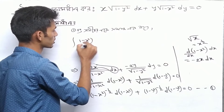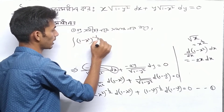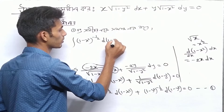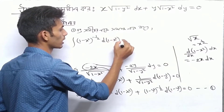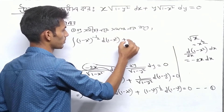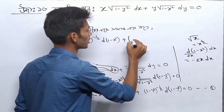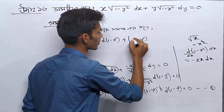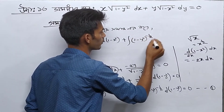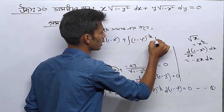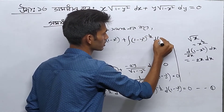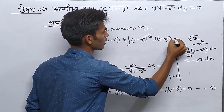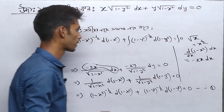So we have the integral of (1-x²) to the power of minus half times d(1-x²), plus the integral of (1-y²) to the power of minus half times d(1-y²), equals 0.